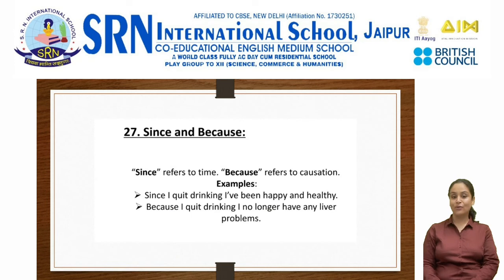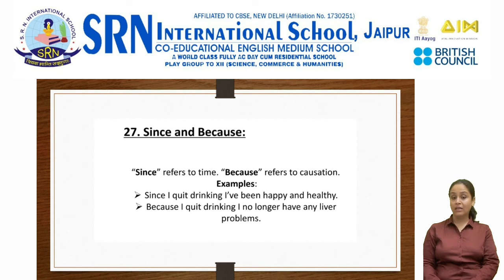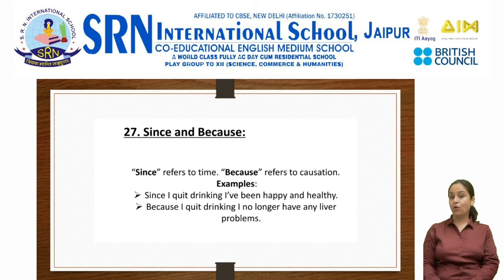The next error is the usage of since and because. Since refers to time and because refers to causation. For example: since I quit drinking, I have been happy and healthy — this refers to the time when you quit. Because I quit drinking, I no longer have any liver problems — this is causation, which is why the conjunction because has been used.